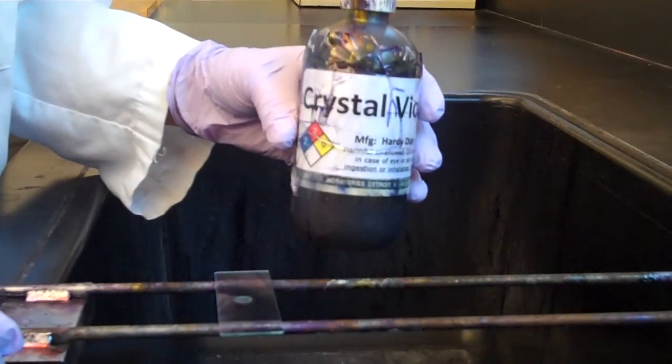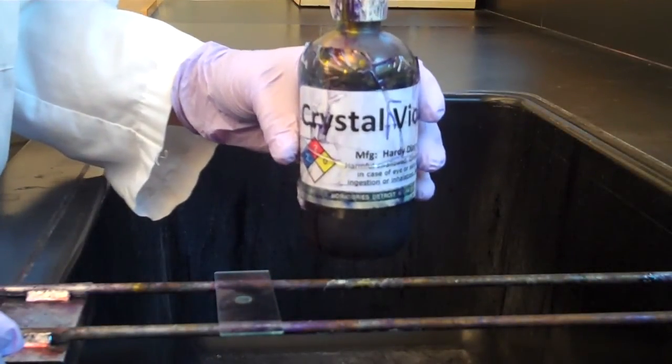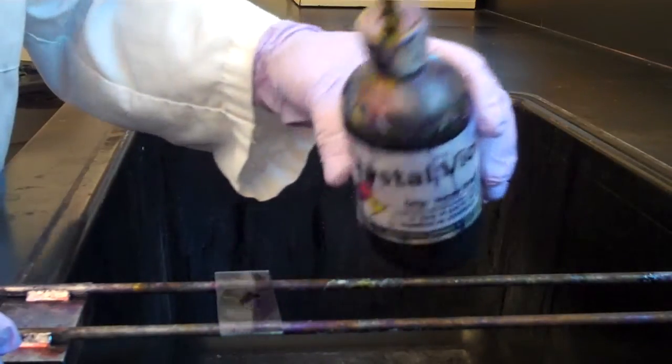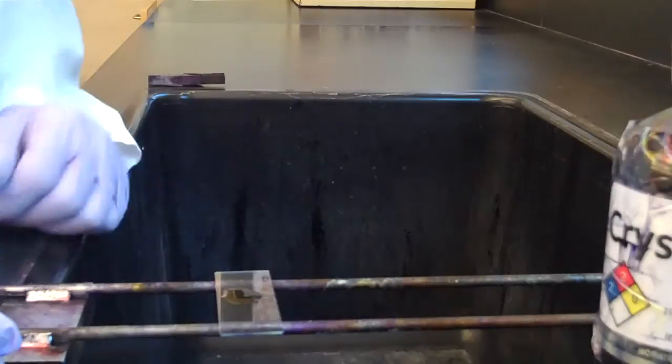Today we're going to demonstrate the Gram stain. Begin the Gram stain by puddling crystal violet just on top of the smear. Wait one minute.